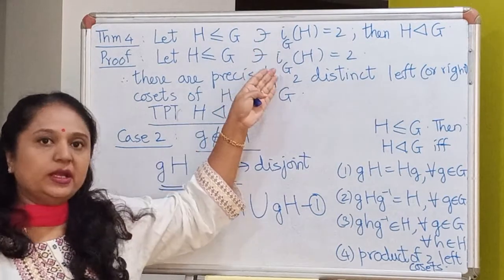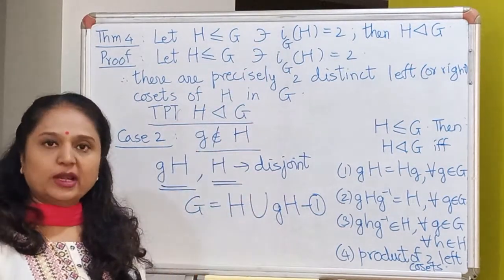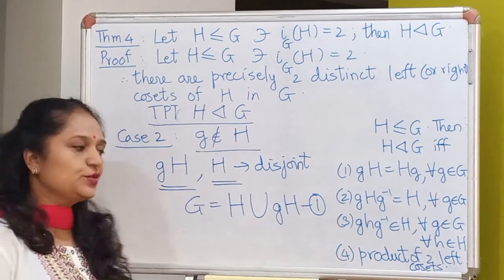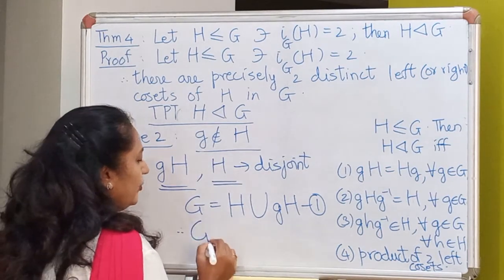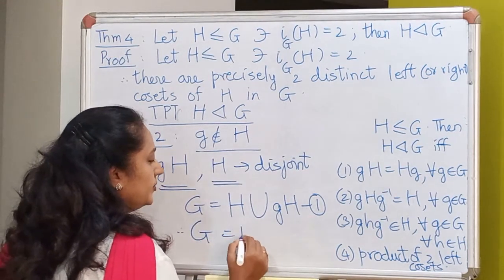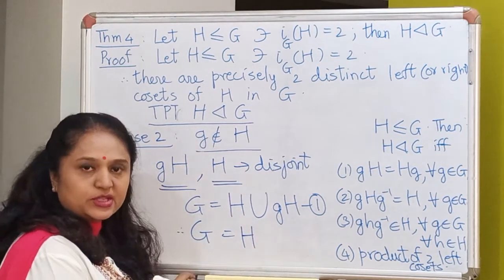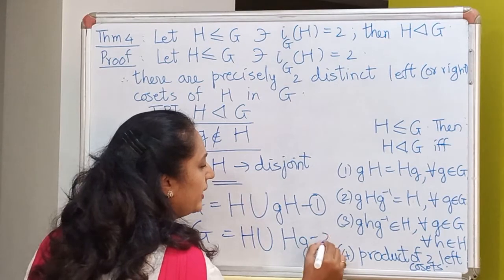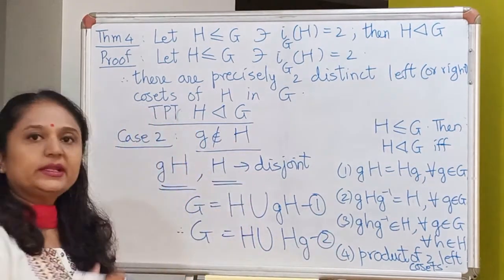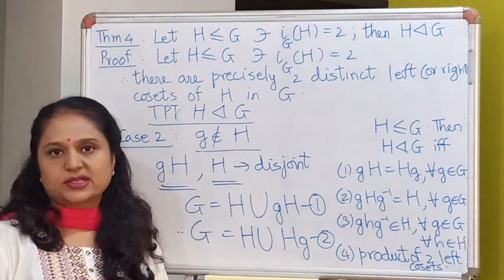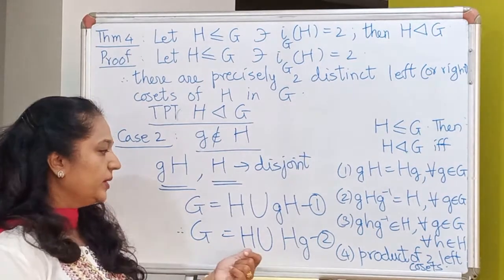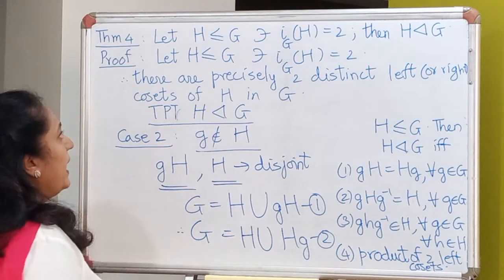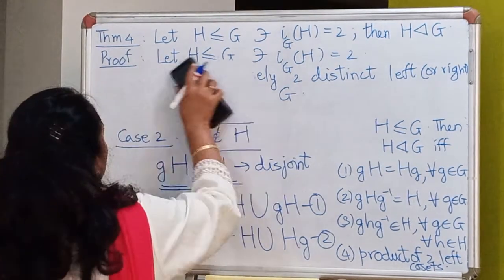Whatever argument I have used for left cosets works precisely the same for right cosets. So I can also look upon H as a right coset, and repeating the argument for right cosets gives G = H ∪ Hg.